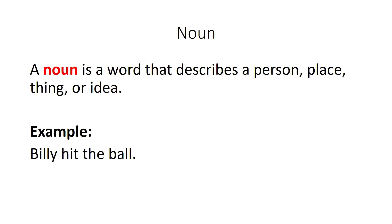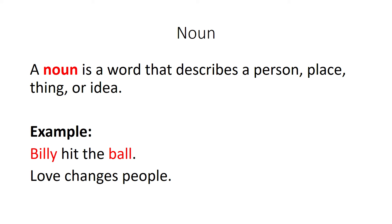A noun is a word that describes a person, place, thing, or idea. So for example, in the sentence 'Billy hit the ball,' we have two nouns: Billy, that's a person, and ball, that's a thing. And in the sentence 'love changes people,' we also have two nouns: love and people. If you're frozen thinking how is love a noun — it's an idea, it's an abstract noun.